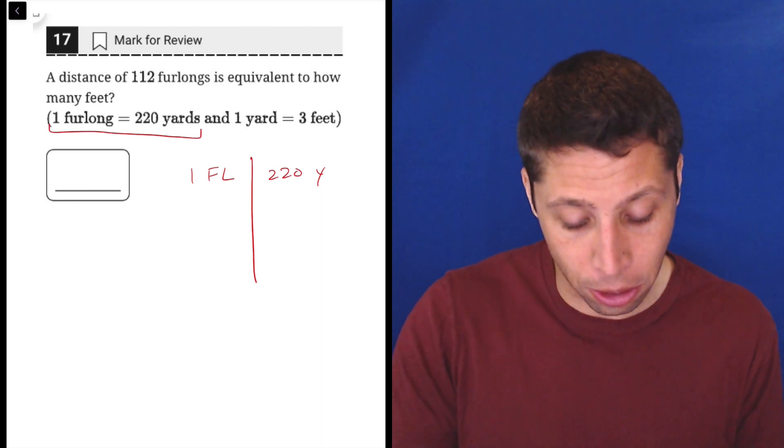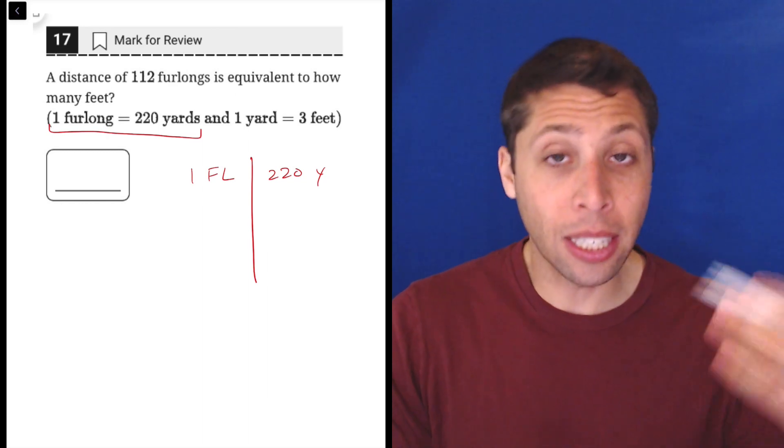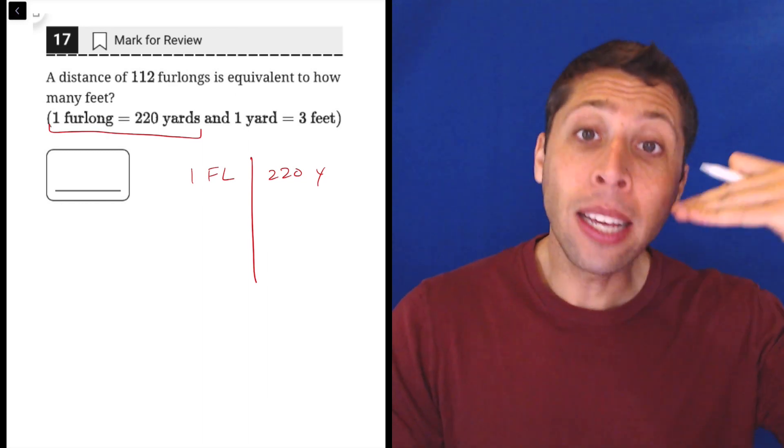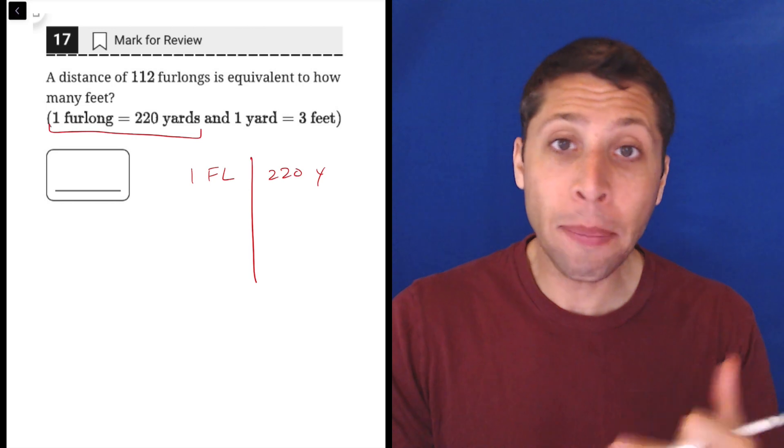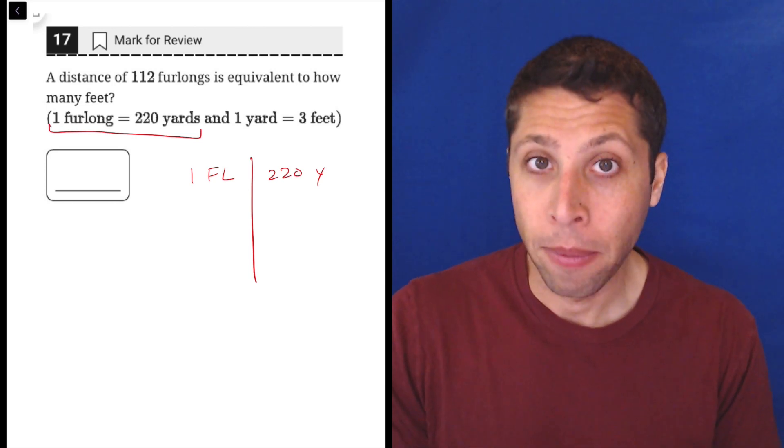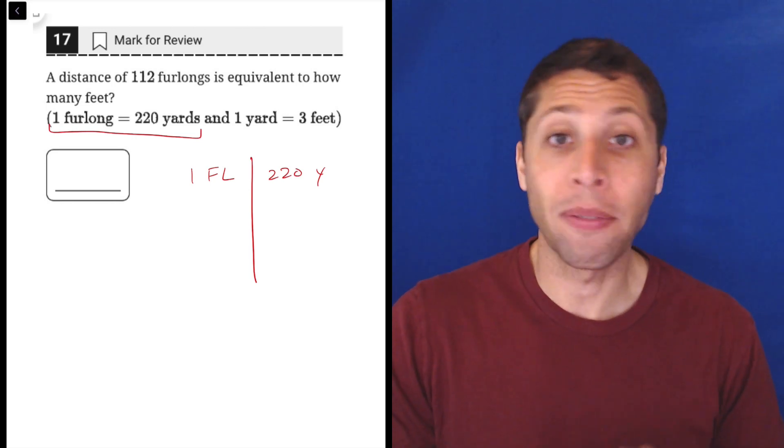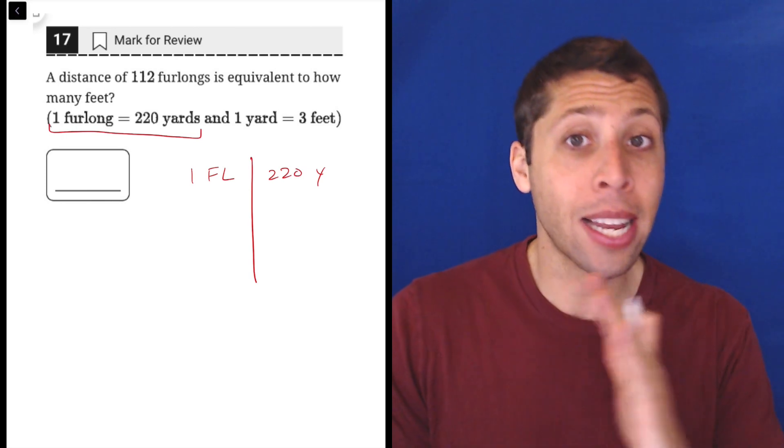But I could have reversed them if I wanted to. For the next piece, I'm just going to keep going, adding rows to my chart. But every time I do it, I want to eliminate a unit. And the way to eliminate one is to have the same unit on the left side and on the right side.